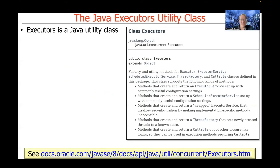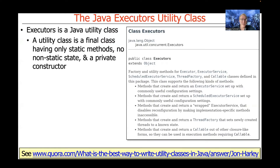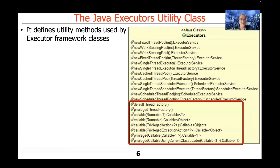The Executors class is a Java utility class. In Java, a utility class is a final class having only static methods, no non-static state, and a private constructor. It defines a bunch of utility methods used by various classes in the Executor framework — things like a callable that converts a runnable into a callable, and so forth.